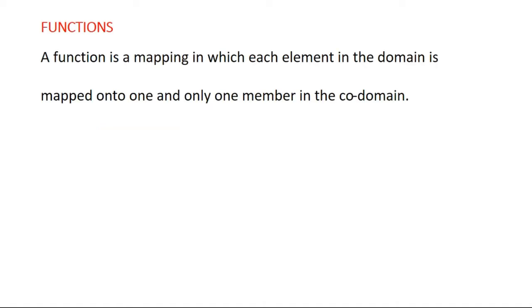So what's a function? A function is a mapping in which each element in the domain maps onto one and only one member in the codomain. So each element in the domain will have only one image in the codomain.